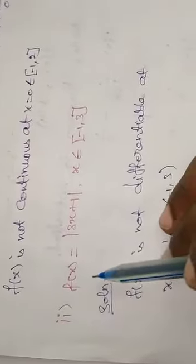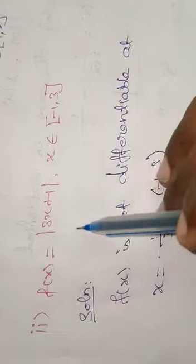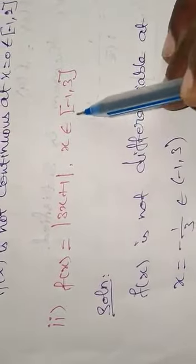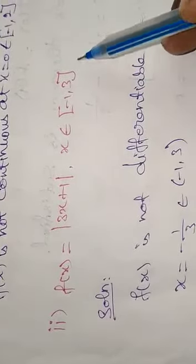Second question: f(x) equals modulus of 3x plus 1, where x belongs to closed interval minus 1 comma 3.